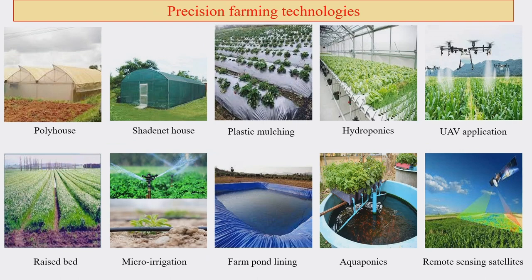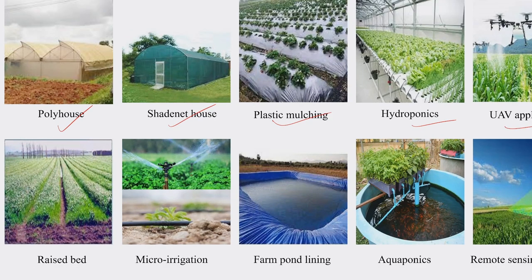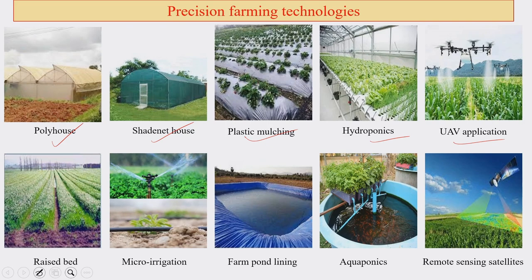Most of you have probably heard about precision farming technologies. Many things can come under precision farming technologies. In this slide you see many examples: poly house, shed net house, plastic mulching, hydroponics, UAV application, raised bed, micro-irrigation, farm pond, aquaponics, and remote sensing. These are various examples of technologies which we can call precision farming technologies, each with very different uses and applicable in particular conditions.